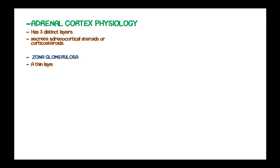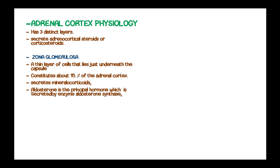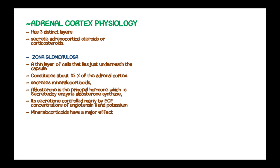The zona glomerulosa, which is the outermost layer, is a thin layer of cells that lies just beneath the capsule. It secretes the mineralocorticoids, and the major one is aldosterone, which is secreted by the enzyme aldosterone synthase. Its secretion is controlled mainly by the extracellular fluid level of angiotensin II and potassium levels. Mineralocorticoids have a major effect on the levels of minerals such as sodium and potassium in the body fluids.